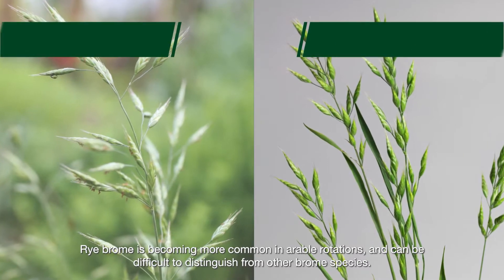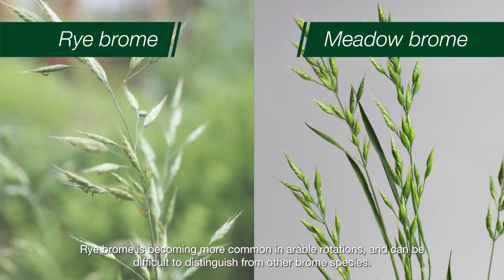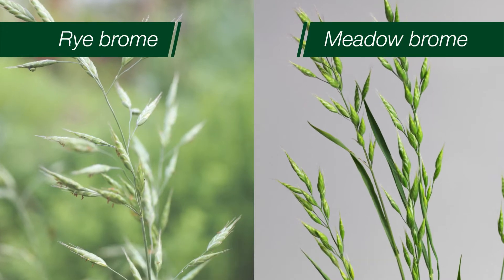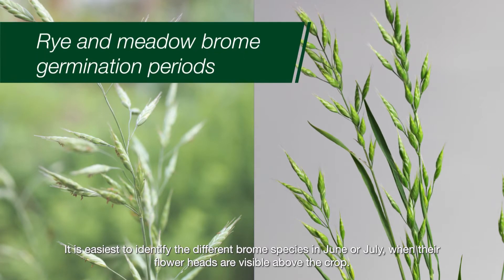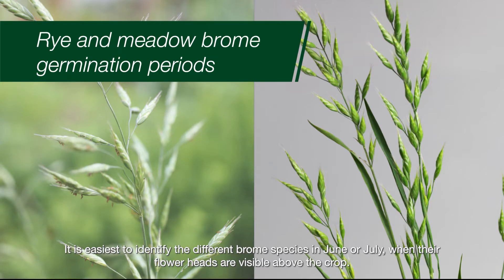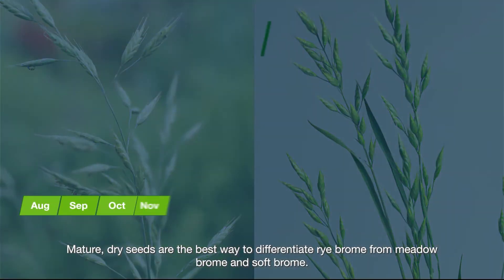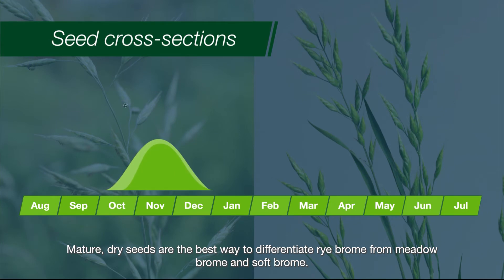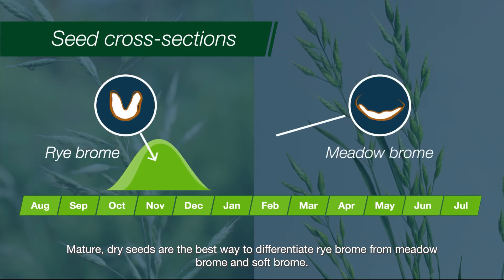Rye brome is becoming more common in arable rotations and can be difficult to distinguish from other brome species. It is easiest to identify the different brome species in June or July when their flower heads are visible above the crop. Mature dry seeds are the best way to differentiate rye brome from meadow brome and soft brome.